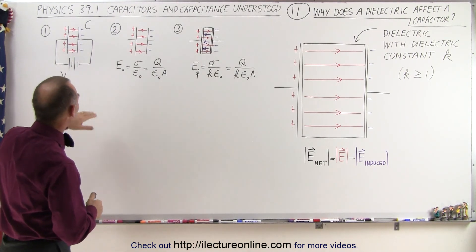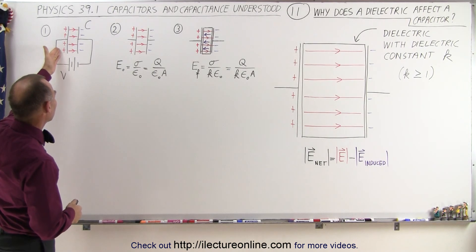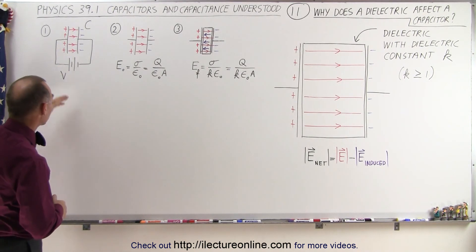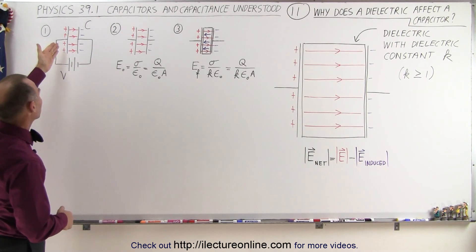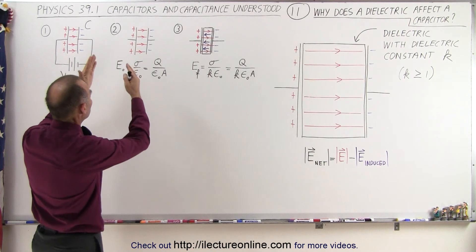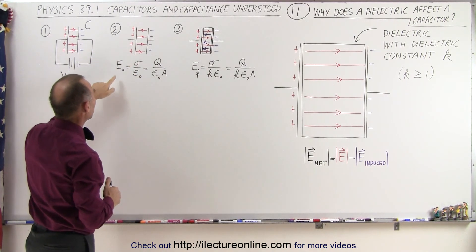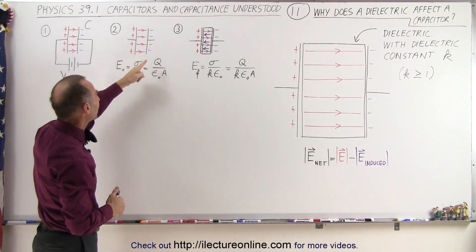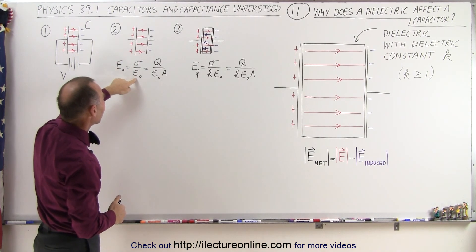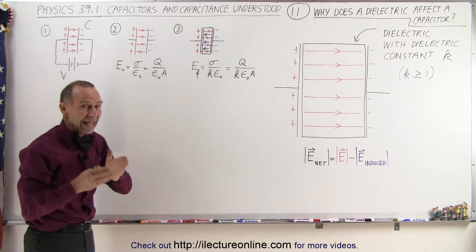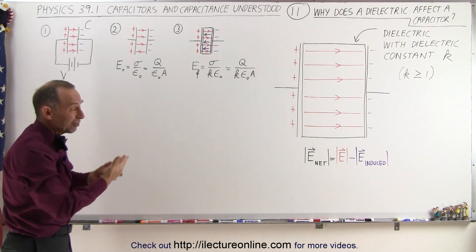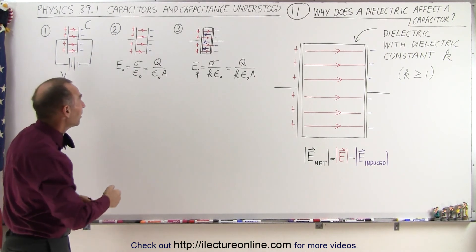What we have here pictorially is first a capacitor that's hooked up to a battery. This is the symbol for a battery, so the voltage supply pushes charges onto a capacitor. We then disconnect the capacitor such that the charge remains on the capacitor, and we can see that the electric field between the plates is defined as the charge density on the plate divided by epsilon sub-naught, because we have just air in between the plates, and the dielectric constant for air is nearly one, like it is in free space.